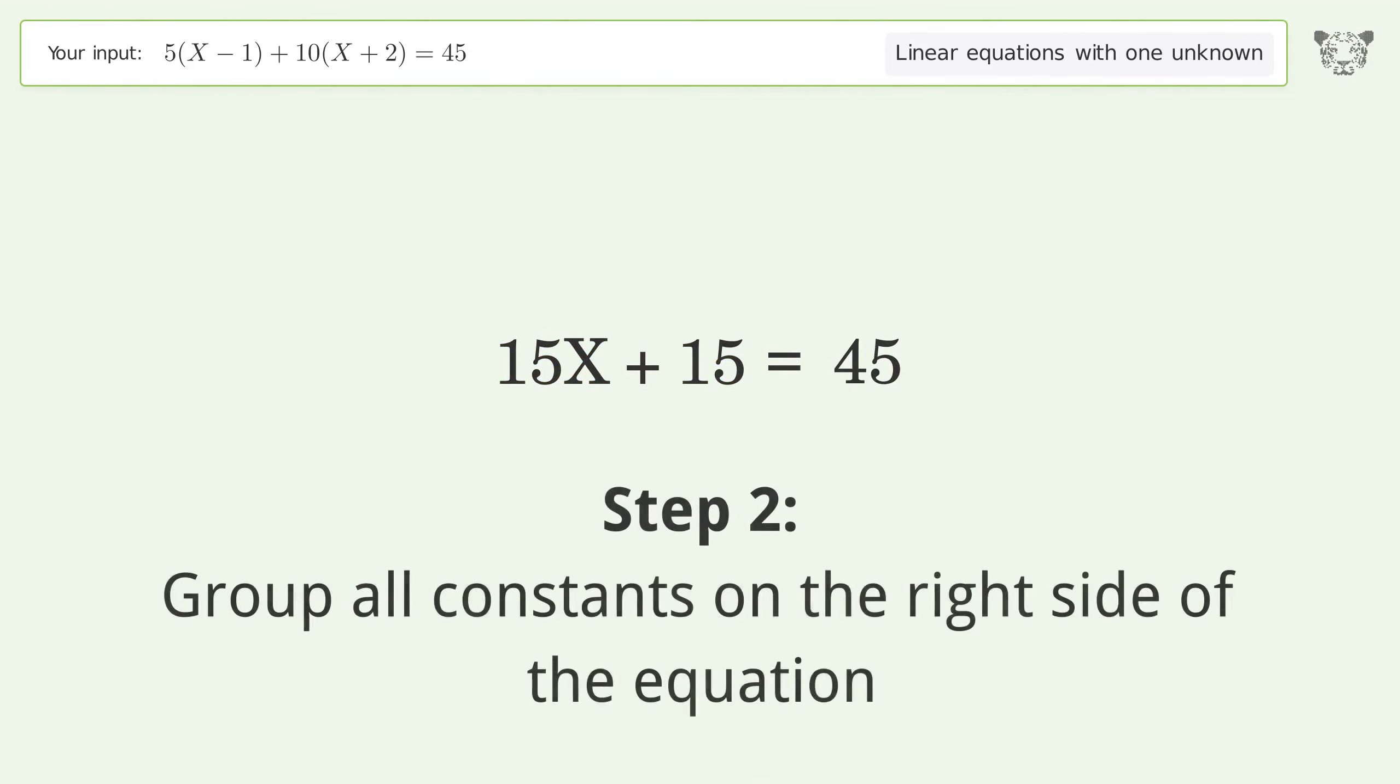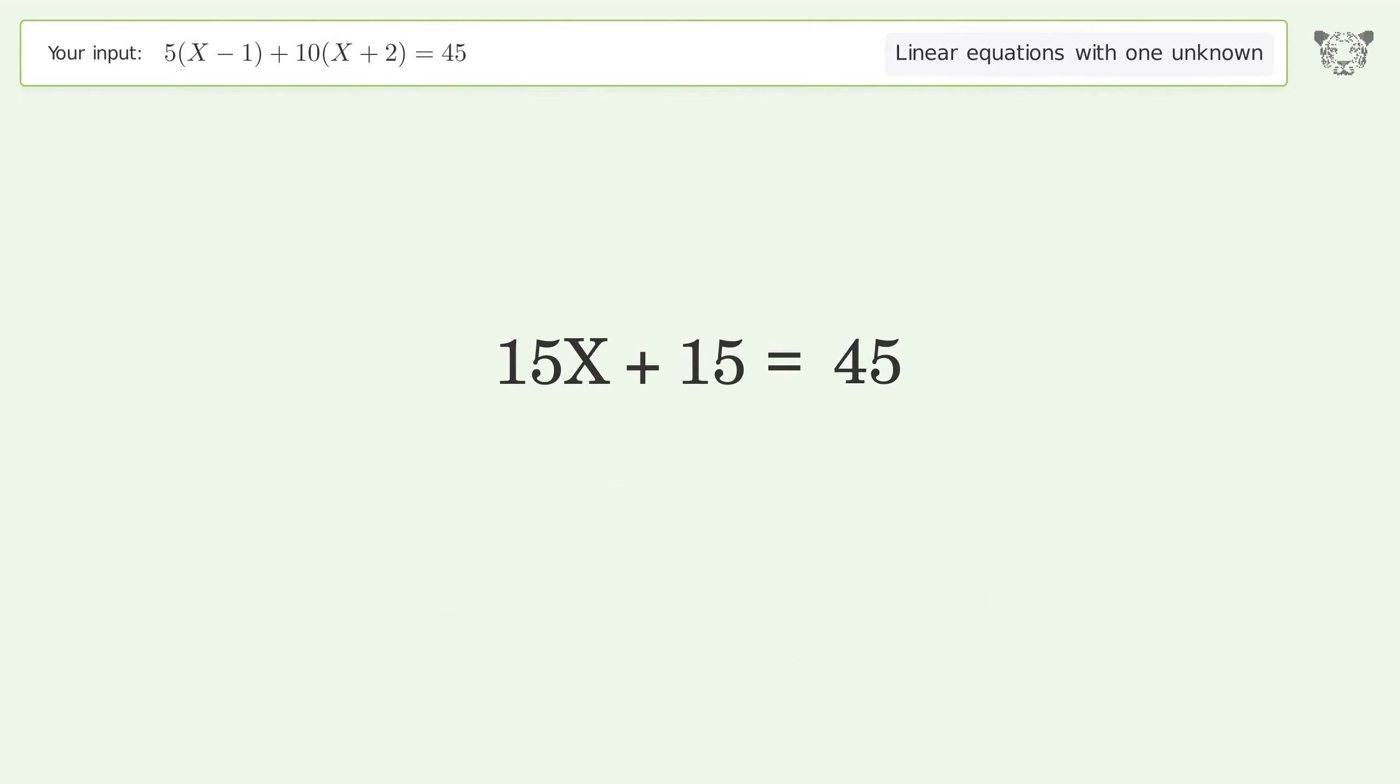Step 2: Group all constants on the right side of the equation. Subtract 15 from both sides.